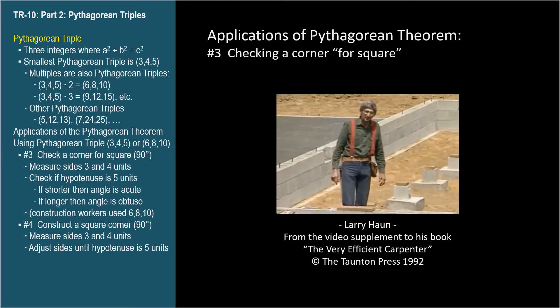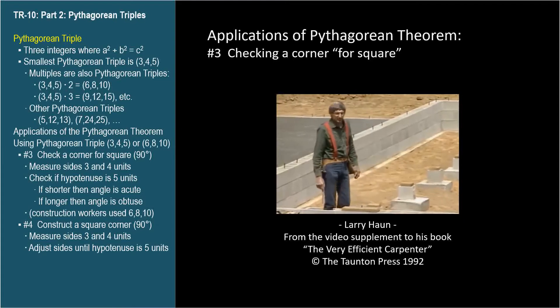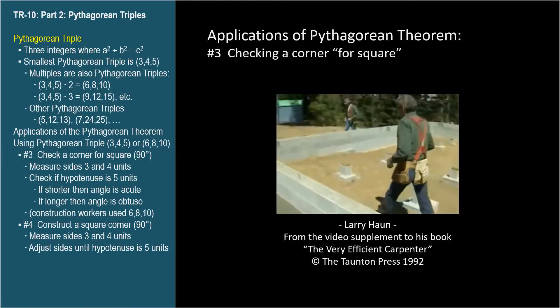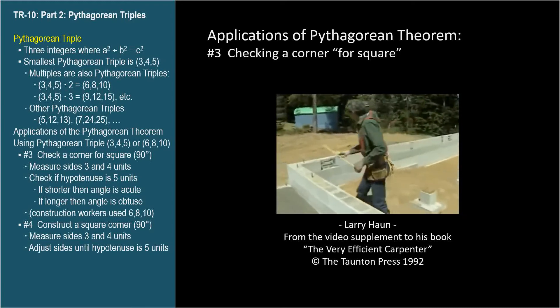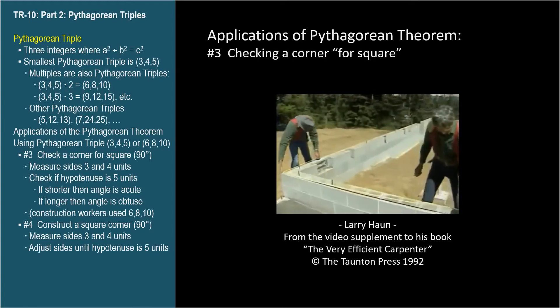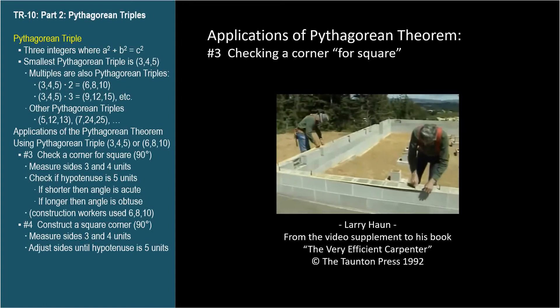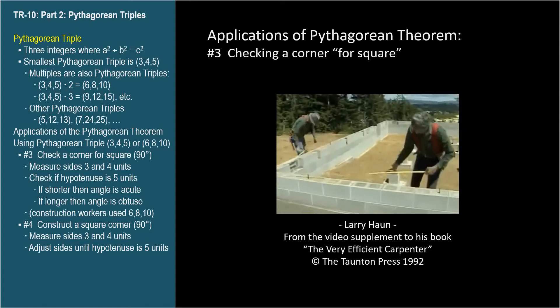So, we'll begin by Joe and I checking this building for square. You pull out 6 foot, I'll pull out 8 foot. We're using a standard 6, 8, and 10 check to make sure the block layers left us with a 90 degree corner.